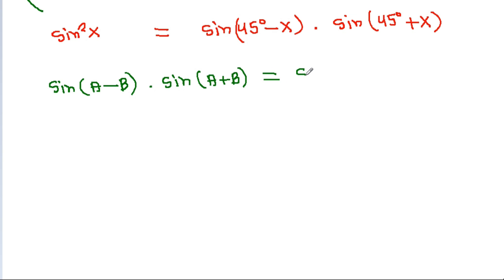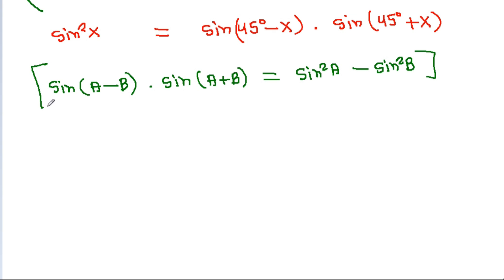Using the identity sin A minus B times sin A plus B equals sin² A minus sin² B, we get sin² x equals sin²(45°) minus sin²(x), which simplifies so that sin² x equals sin(45° + x).